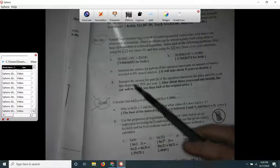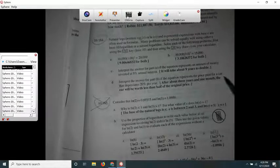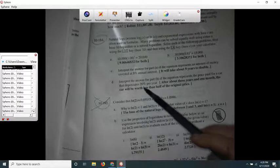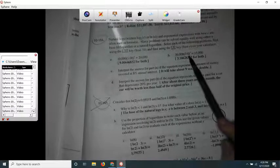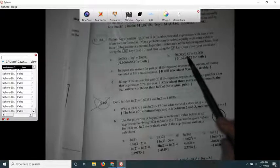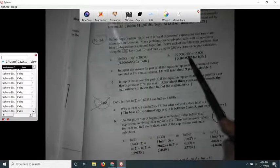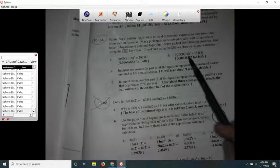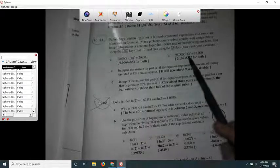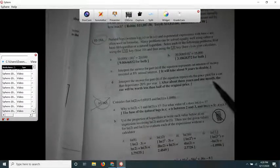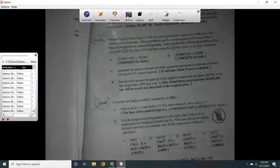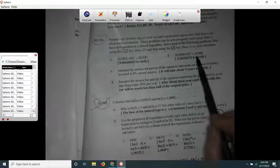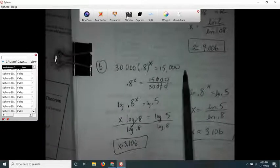Letter d says interpret the answer for part b if the equation represents the price paid for a car that depreciates 20 percent per year. If it depreciates by 20 percent, then it's only worth 80 percent of what it was the previous year. That's where the 0.8 comes from, that's the 80 percent because it's depreciating by 20, and 100 take away 20 is 80. In about 3 years and 1 month, the car will be worth less than half of the original price. Where'd they get the half from? When I divided both sides by 30,000, I ended up with the 0.5. So that's problem 10-184.